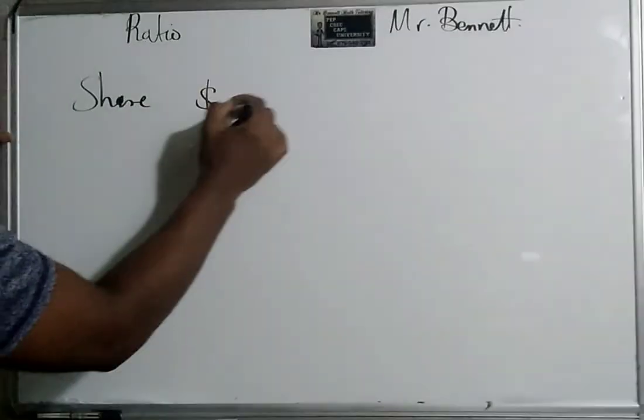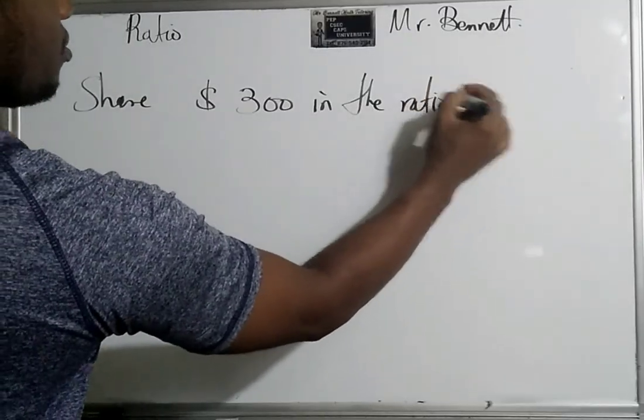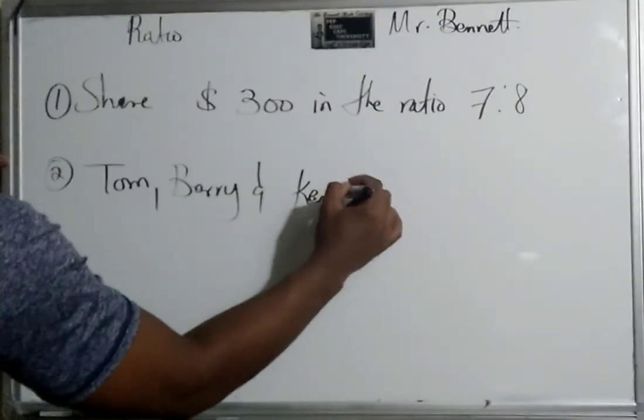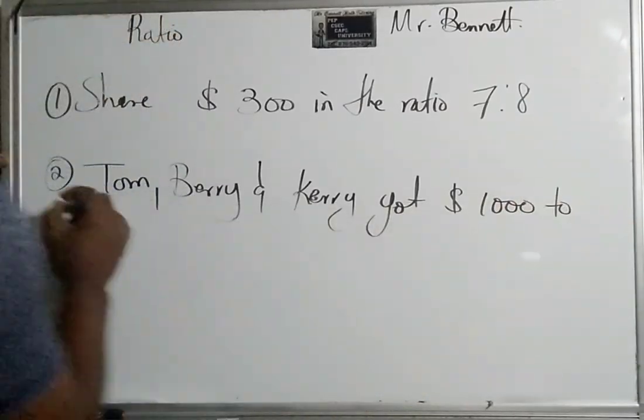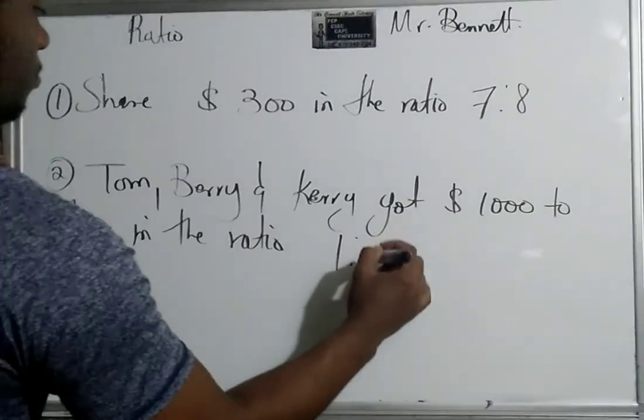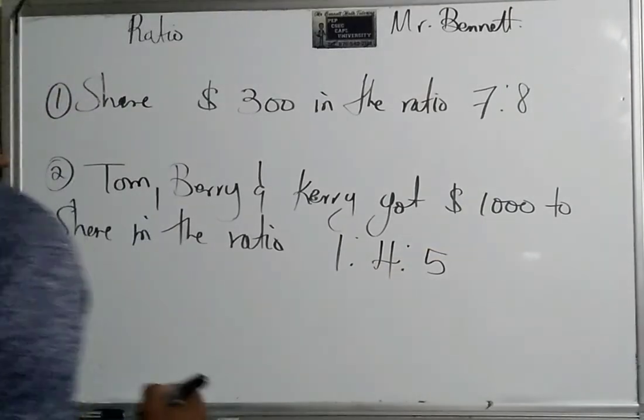All right guys, this one says share three hundred dollars in the ratio 7 to 8. Number two says Harry, Berry, and Carry got one thousand dollars to share in the ratio 1 to 4 to 5.